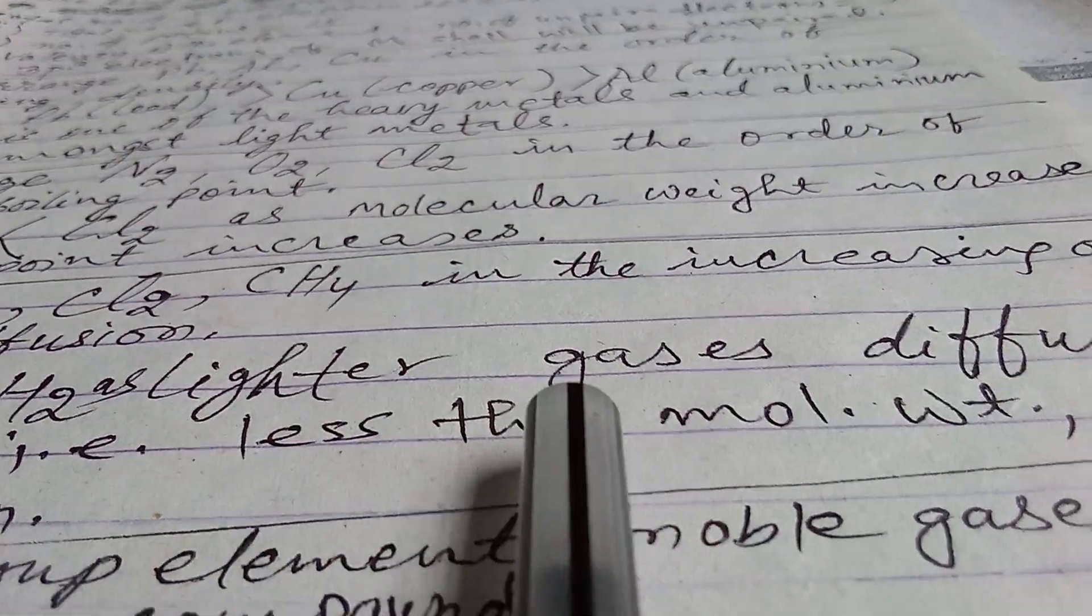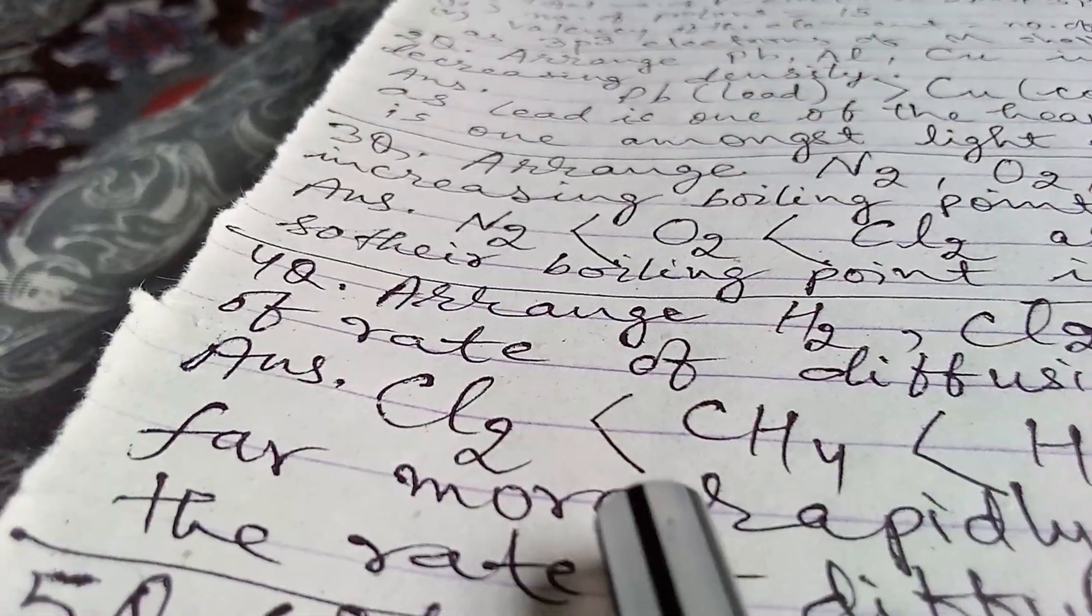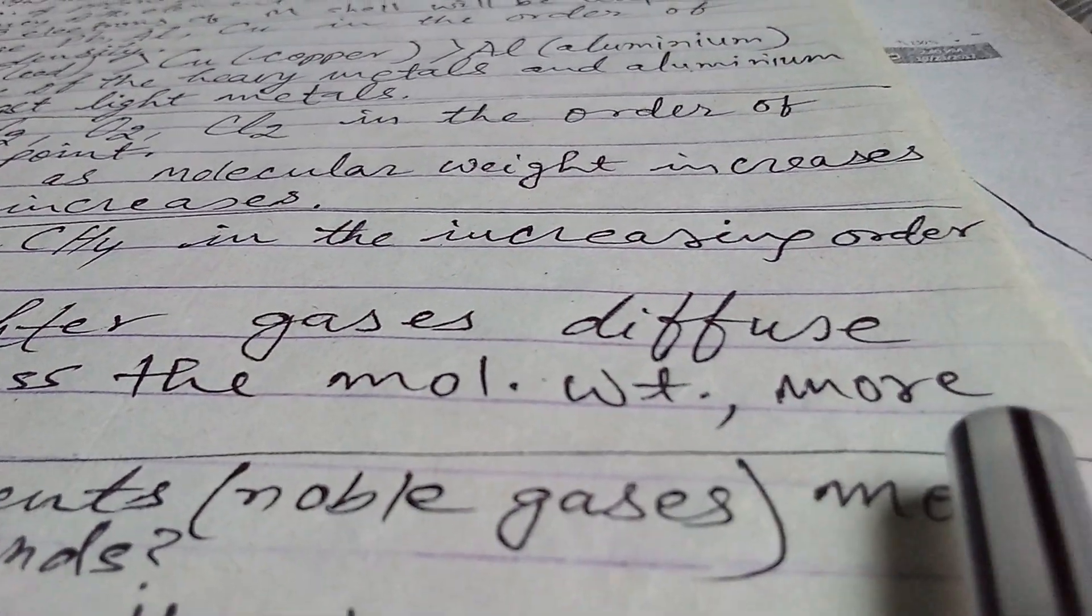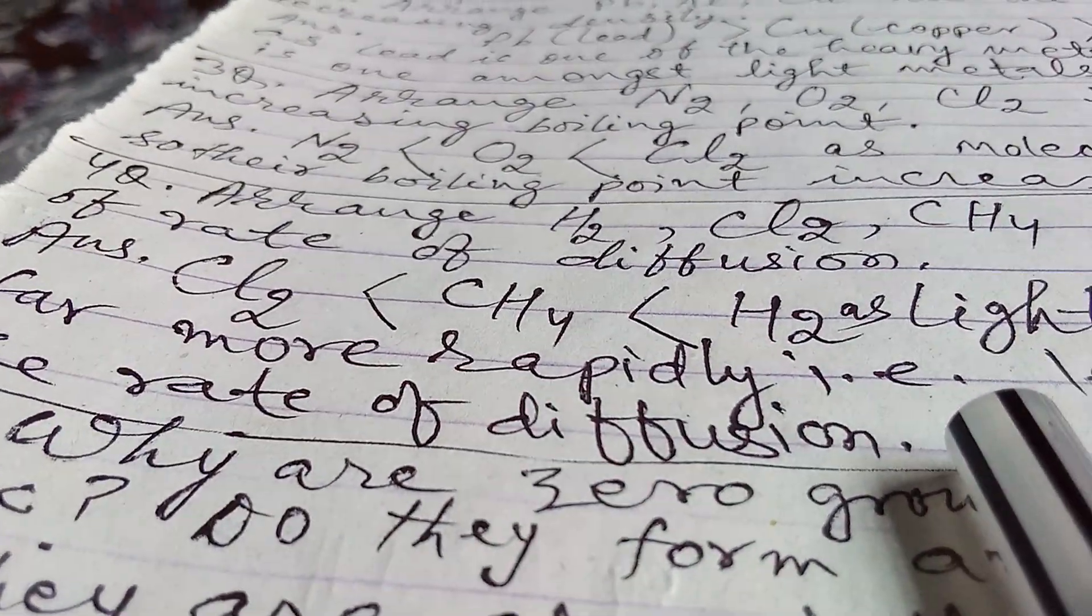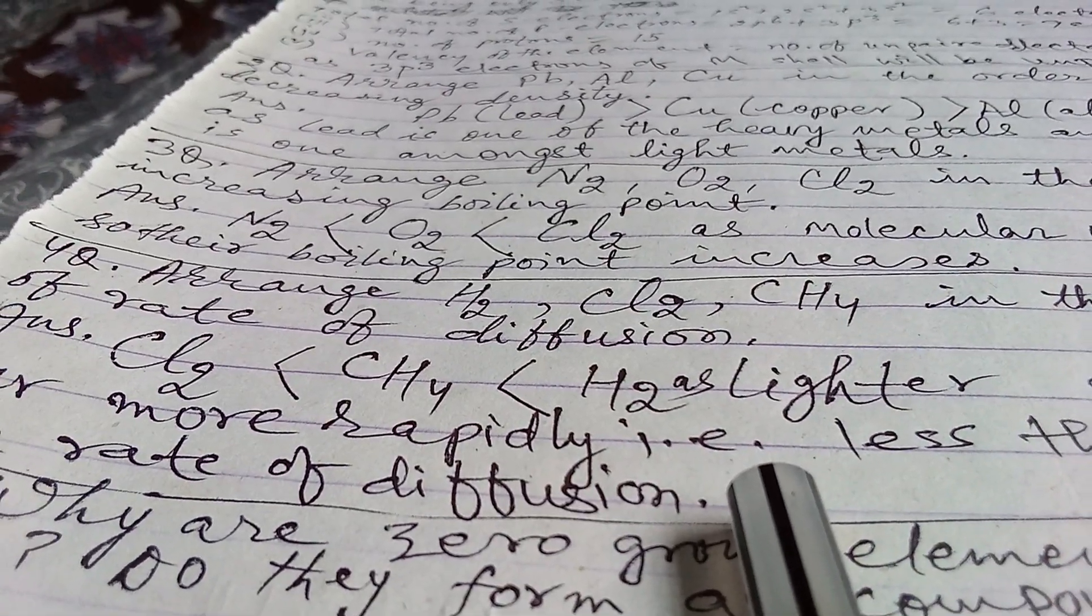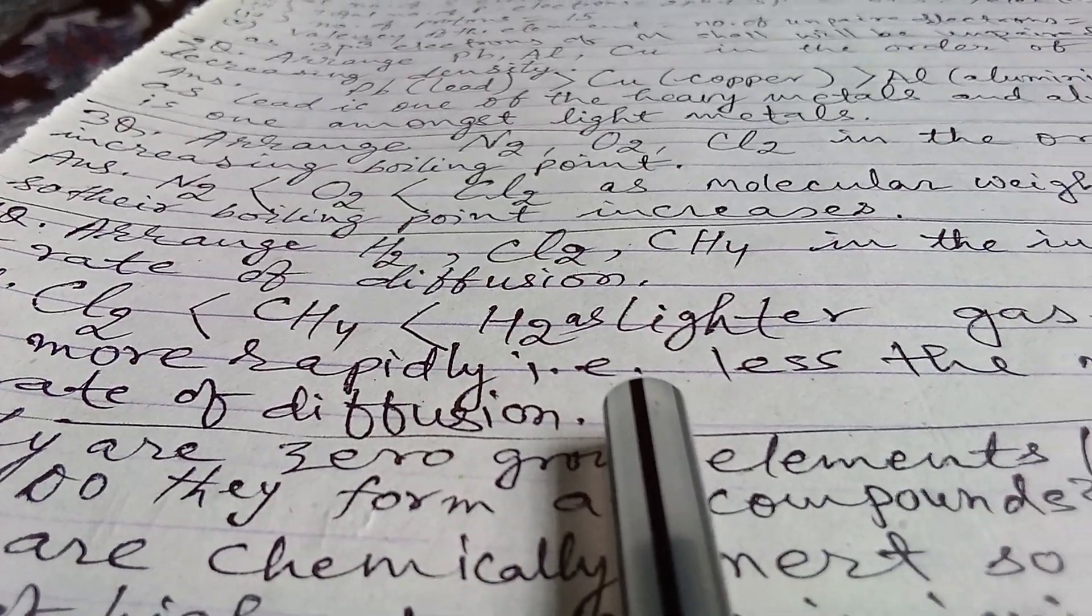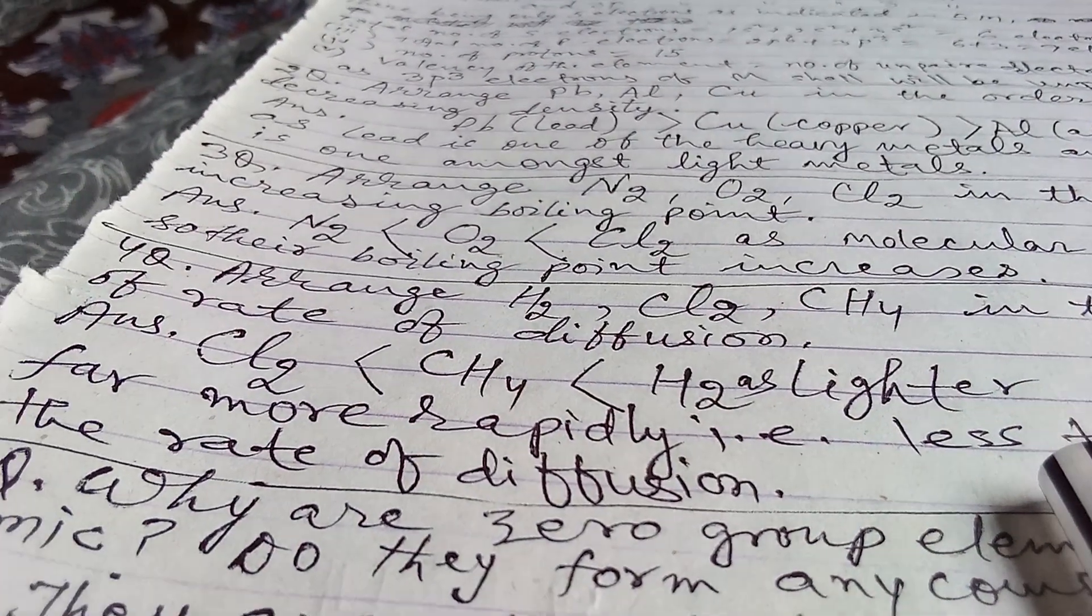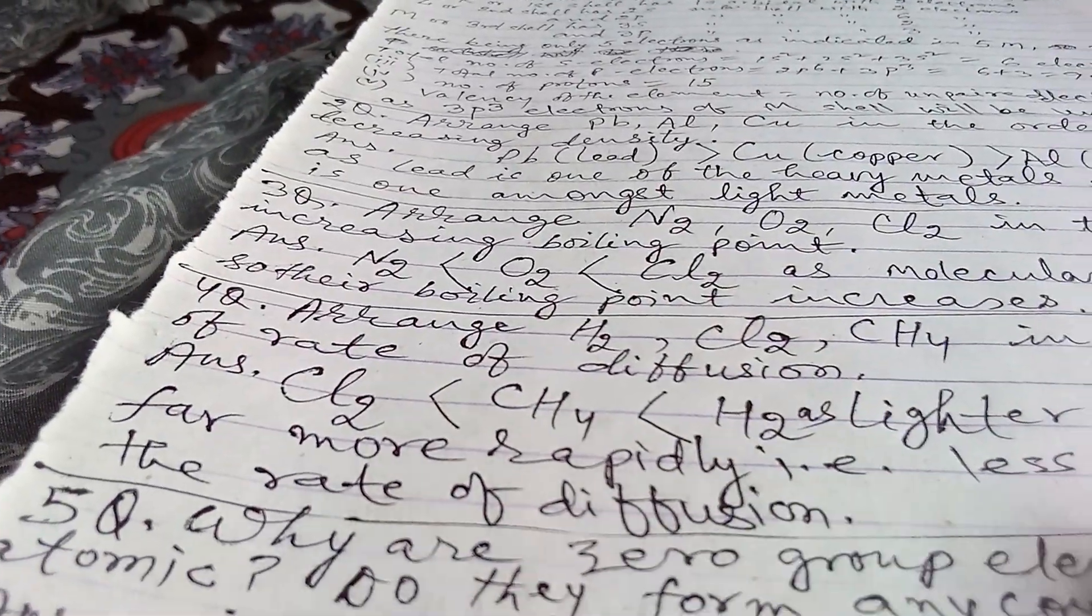Hence lighter gases diffuse far more rapidly. That is, less the molecular weight, more the rate of diffusion. That means you can say that molecular weight and rate of diffusion are inversely proportional. If molecular weight is more, rate of diffusion is less. And if molecular weight is less, rate of diffusion is more.